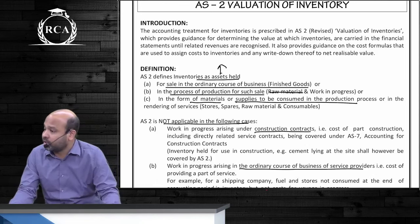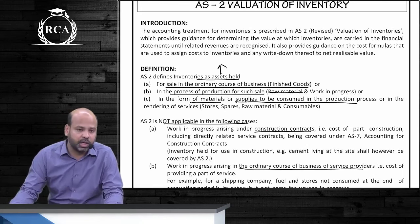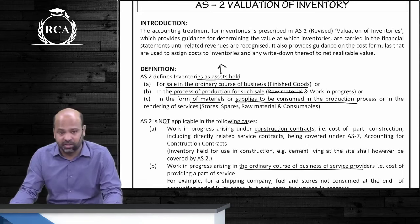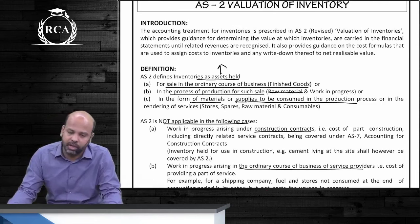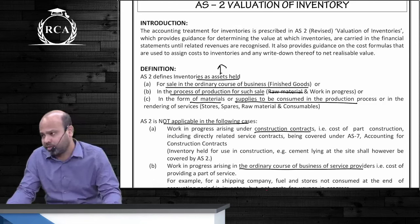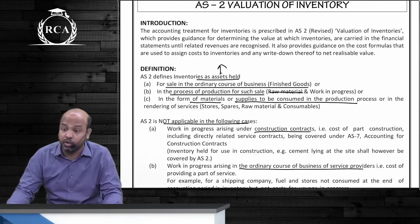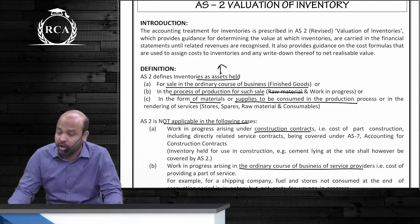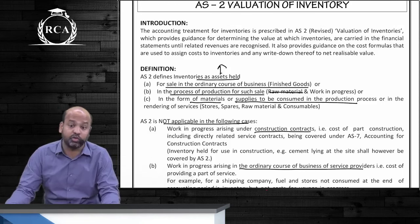This standard does not apply to construction work in progress, service work in progress, shares or debentures held as stock in trade, and agricultural products, forest products, livestock, and mineral resources. These products are usually valued at NRV. However, if you are a dealer in agricultural products, AS2 is still applicable. It is not applicable to the producer of these products, but to subsequent dealers, AS2 still applies.